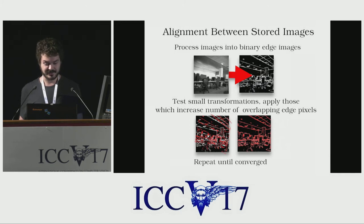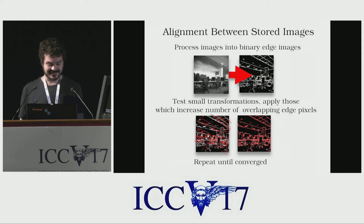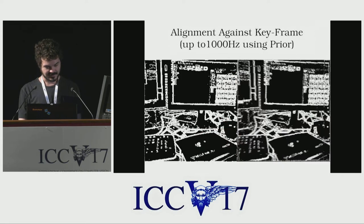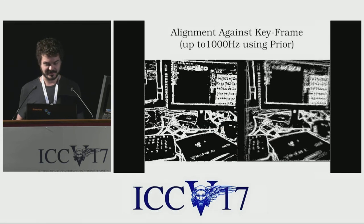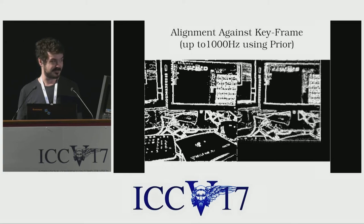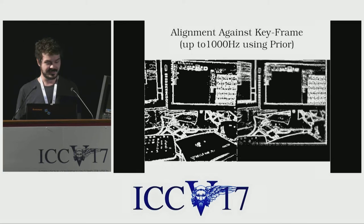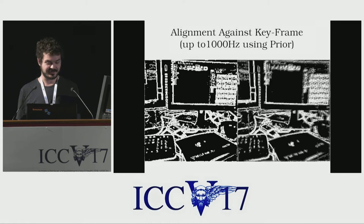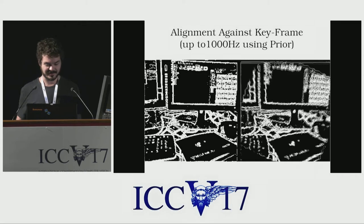Using these transformations, we are able to conduct image alignment between images stored on the sensor's image plane. This involves extracting edges from each image and conducting an iterative process to maximize the number of edge pixels overlapping between them. Here we see an example of using this process to align the latest sensor image with a stored keyframe. When limiting the sensor's output to just the alignment transformation itself, this can be performed at over 1,000 frames per second.